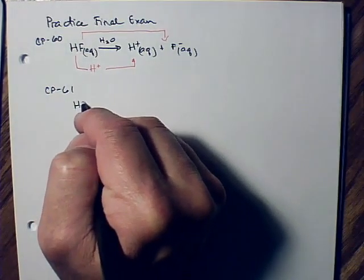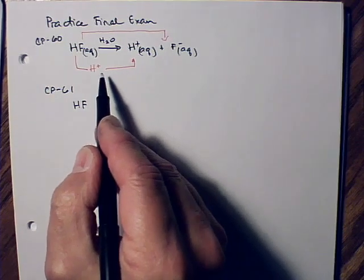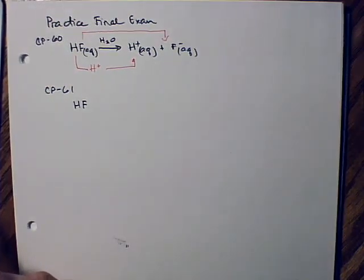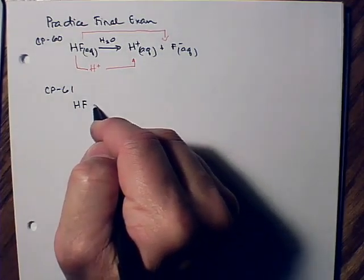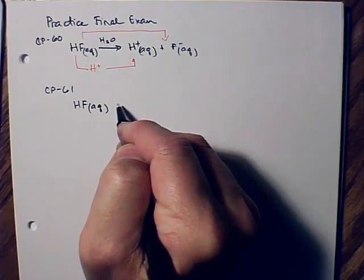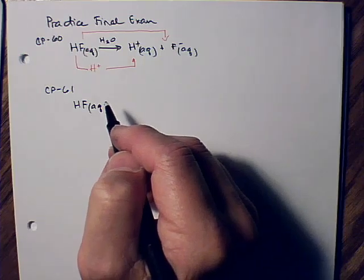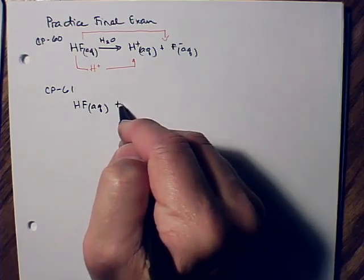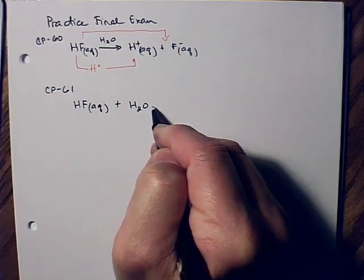So the Bronsted-Lowry theory, when that hydrogen ion comes off, it has to go somewhere and attach itself to something. So what we do is, if we're just writing a dissociation equation and nothing else, then we're going to take that hydrogen off and attach it to a water molecule.